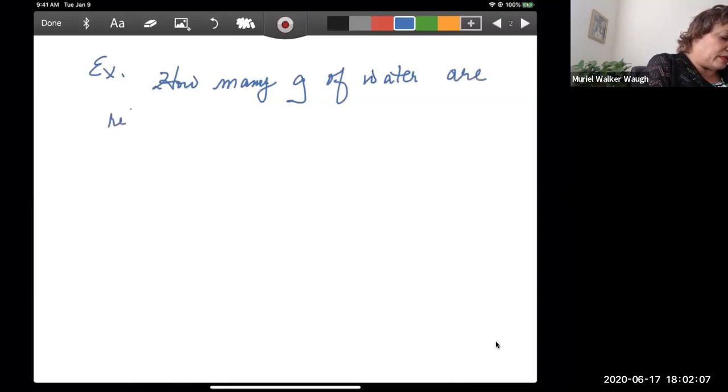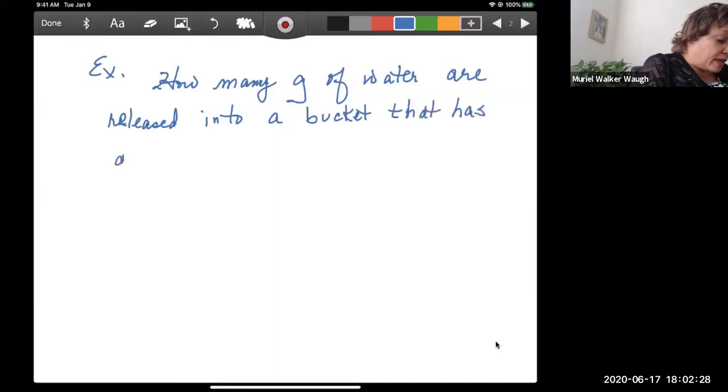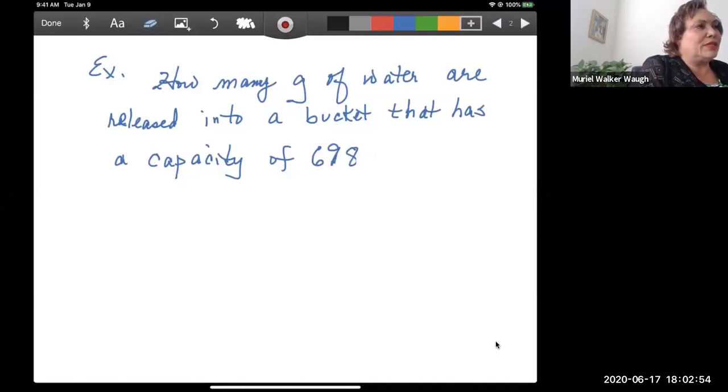are released into, my writing's bad today, into a bucket that has a capacity of, let's say you fill it to brim and let's make it 698. Oh no, that's too easy, 698 milliliters. Oh, let's see, okay, okay, deciliters. All right, easy. Good cheesy, that's nothing for you, yes, because you know the conversions and what you have to do.